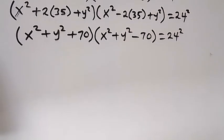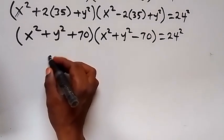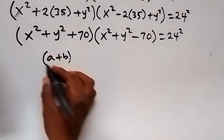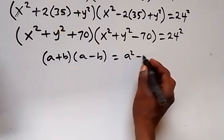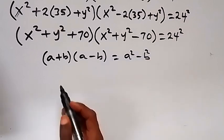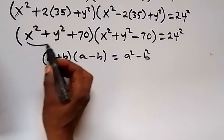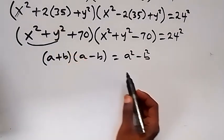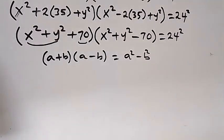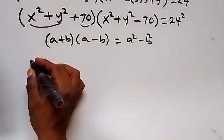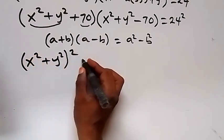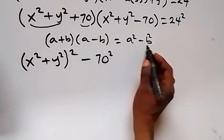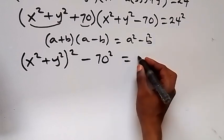When we look at the left-hand side here, it is in the format of a plus b times a minus b, which equals a squared minus b squared from the difference of two squares. Here, x squared plus y squared is standing as a, and 70 is standing as b. So we can write these two brackets as x squared plus y squared, all squared, minus 70 squared, which equals to 24 squared.